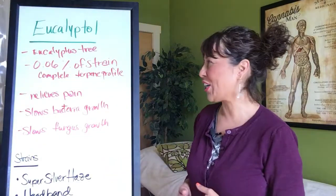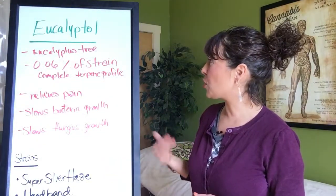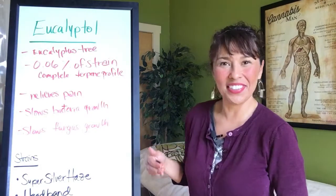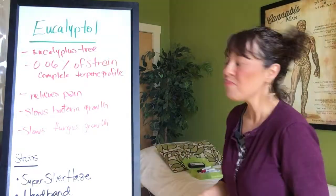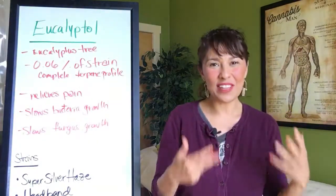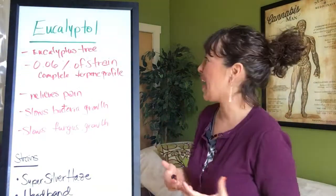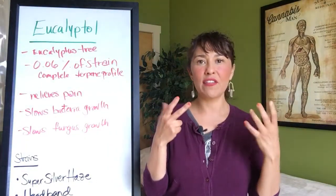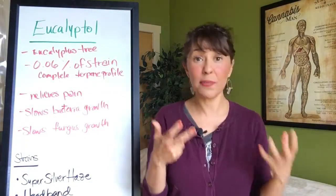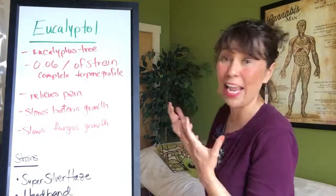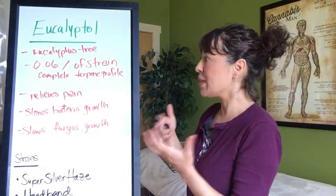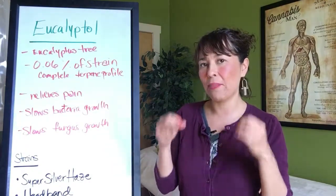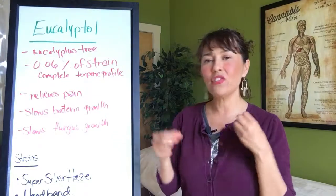We're finishing this little series here and our terpene today is eucalyptol. Eucalyptol is most widely known for its fragrance or smell from the eucalyptus tree — that's where it gets its name. Zero or point zero six percent of strains actually have this complete terpene.